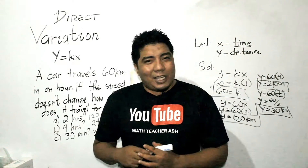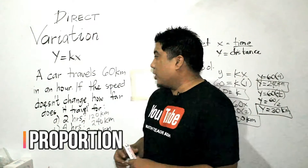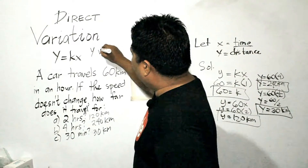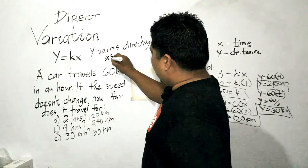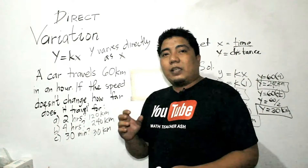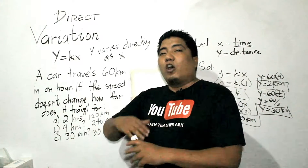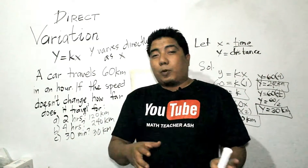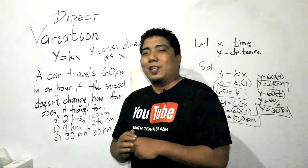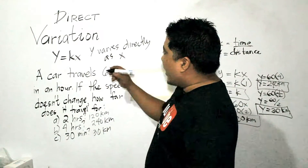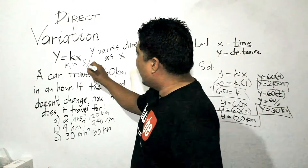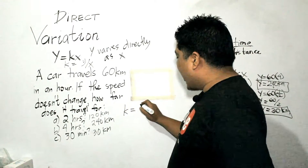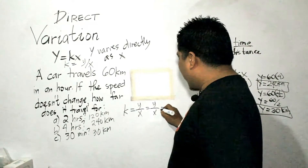Is there any other way to solve this problem? Yes — by the use of proportion. Remember that y is equal to kx is our statement, and this is stated as 'y varies directly as x.' For direct variation, the statement used is 'varies directly,' 'varies proportionally,' or 'is directly proportional.' Remember that k can be solved by y divided by x.